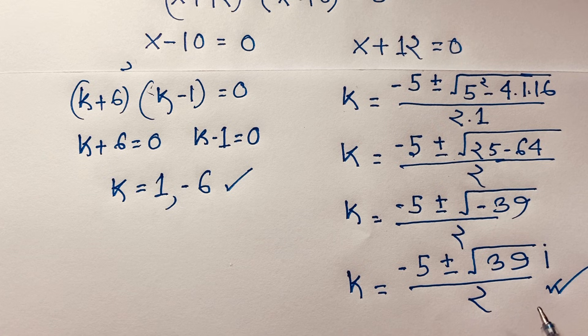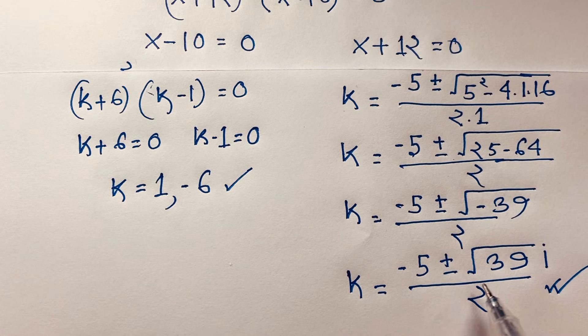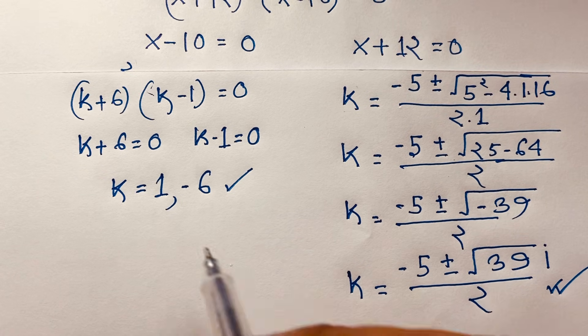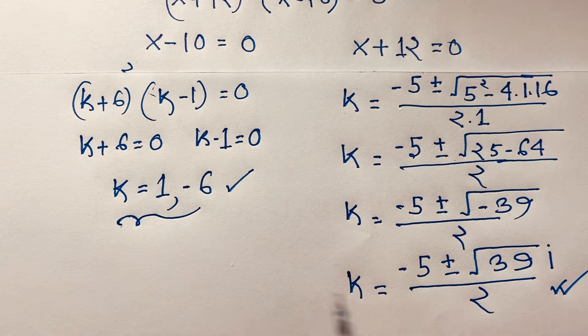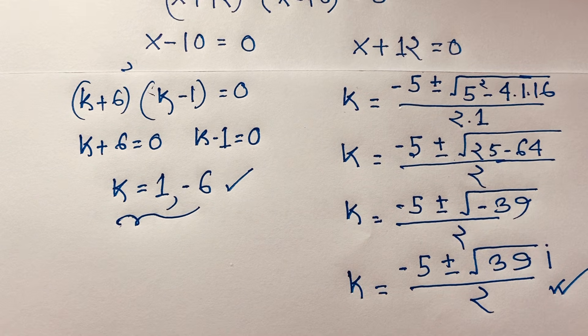This is the value of k in this Math Olympiad question. In total, two solutions are complex numbers and two solutions are real numbers. It is interesting mathematics!